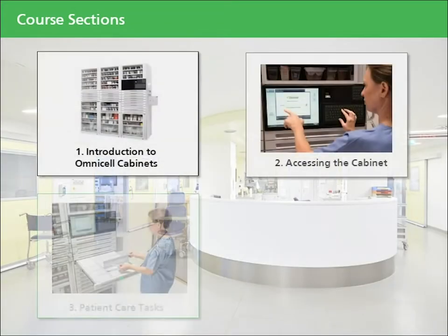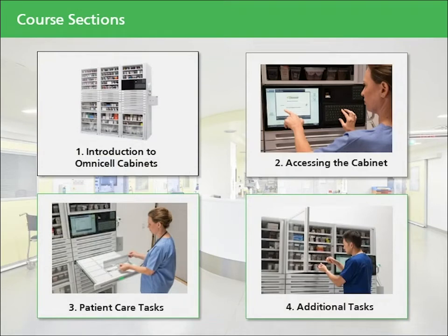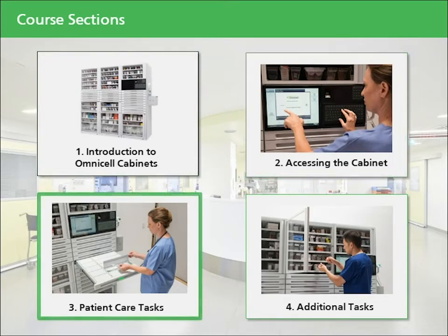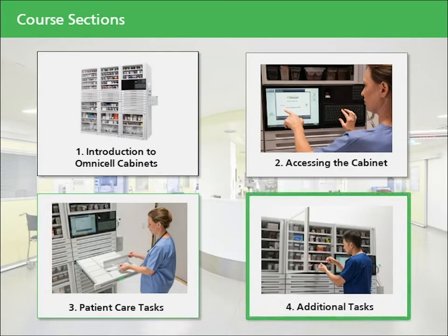This course is divided into four sections. The first section is called Introduction to OmniCell Cabinets, where you'll learn about OmniCell cabinets and other hardware you may encounter at your facility. Next, we'll cover various ways of accessing the OmniCell cabinet. In the third section, Patient Care Tasks, you'll learn about removing, returning, and wasting medications. The last section focuses on additional tasks such as inventory cycle counts or simple reporting.